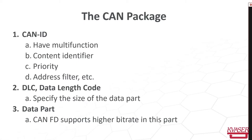The CAN FD package has three parts. The CAN ID in the beginning has a multi-function — it is typically used as a content identifier telling you how to interpret the data packed into the frame. It is also a priority, so the lower the CAN ID number, the higher the priority when competing for the CAN bus. It can also hold addresses like source and destination address. Then there is the DLC we already covered, and the data part, which in CAN FD can be sent at a higher bit rate.